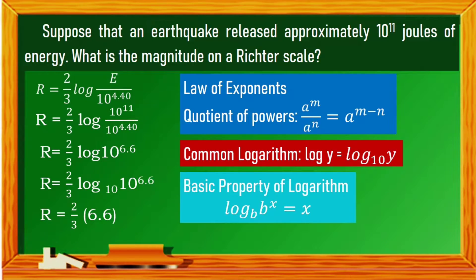Multiply two-thirds by 6.6. You may solve that on your calculator: 2 divided by 3, then multiply the answer by 6.6. The result is 4.4. This means that the magnitude of the earthquake that released an energy of approximately 10 raised to the power of 11 joules is 4.4 on the Richter scale.